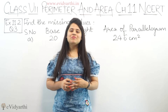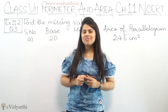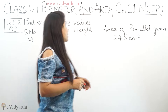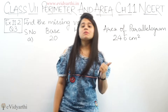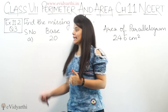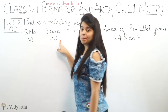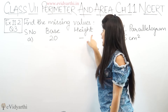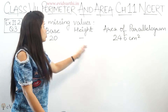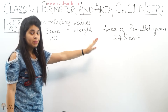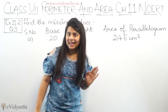Hello everyone, this is Mansi from E. Vidyati. Coming to question number 3, exercise 11.2. In the third question we have to find the missing values. A table is given where some values are missing. You can see base is given, height is not given, and area of parallelogram is given. So it is clear that the area of parallelogram is given, this is the base of the parallelogram, and this is the height of the parallelogram.